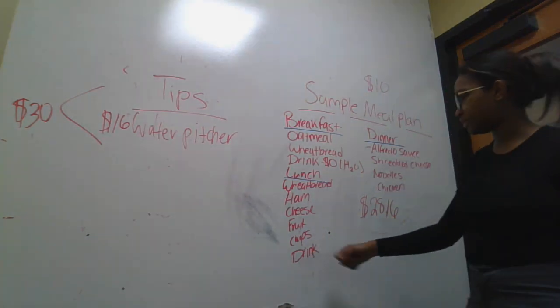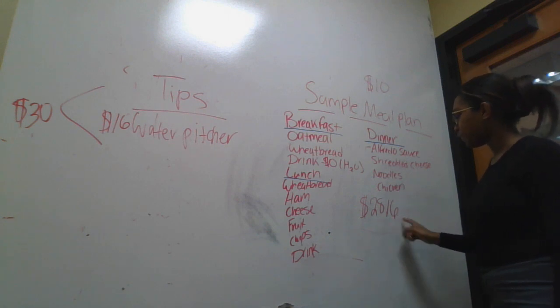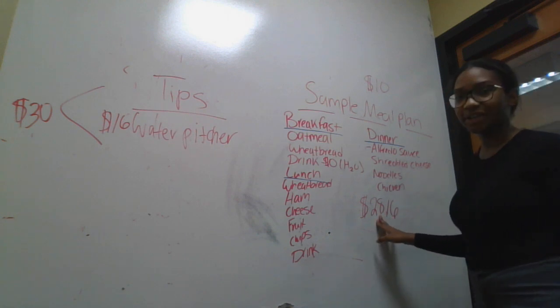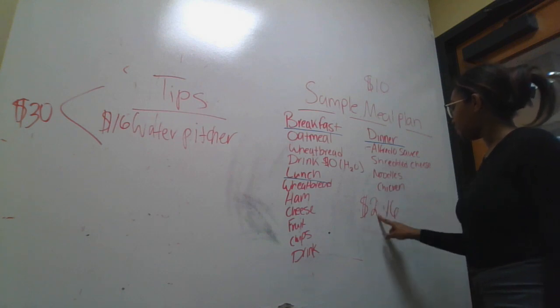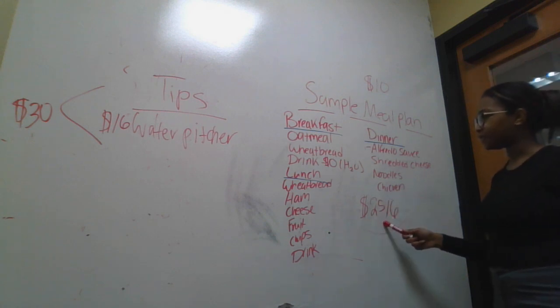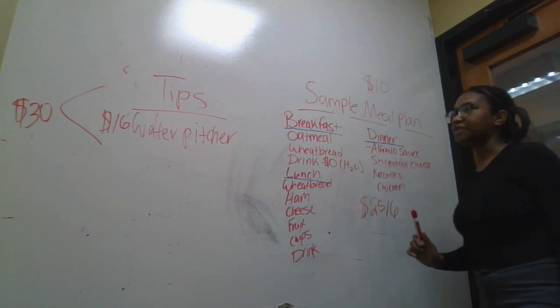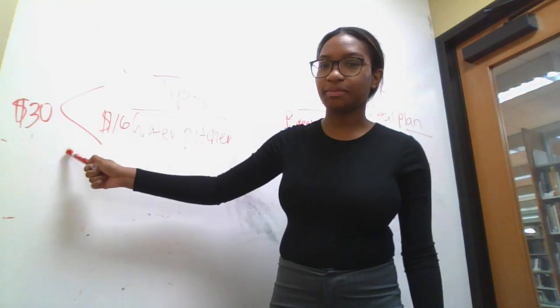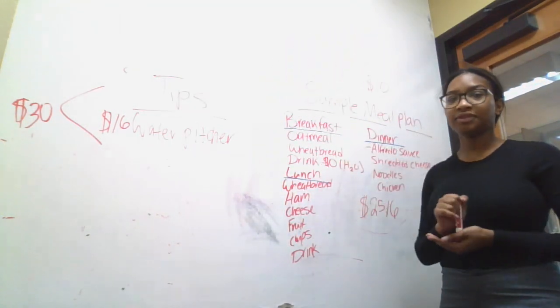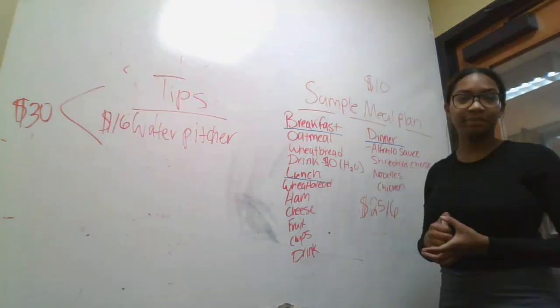Drink, also, still a dollar. You have alfredo sauce, shredded cheese, noodles, chicken. So, roughly around, actually, I think this price should be around $25. So, $25 for three meals versus the $30 that you spent on McDonald's. So, I don't know to y'all, but making the meal at home is seeming a lot better.